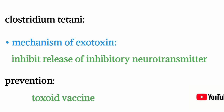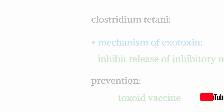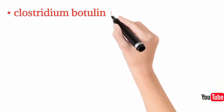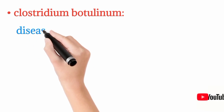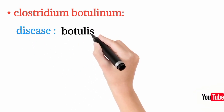Prevention of Clostridium tetani is through the DPT (diphtheria, pertussis, tetanus) toxoid vaccine, which provides protection against three organisms: Clostridium tetani, pertussis, and diphtheria.